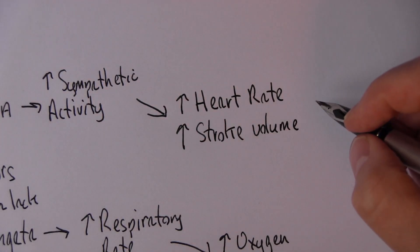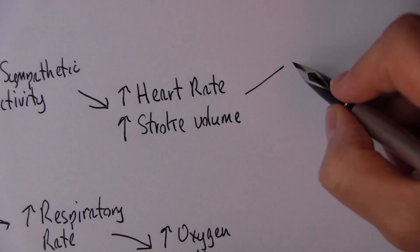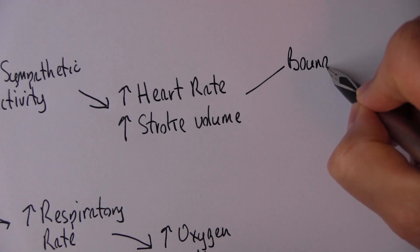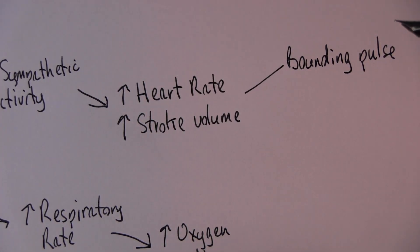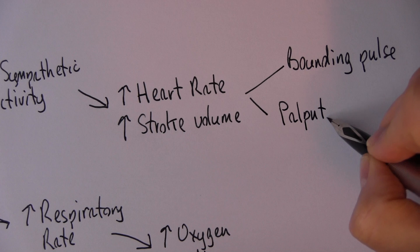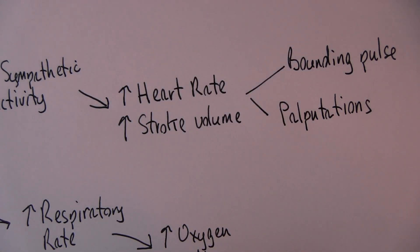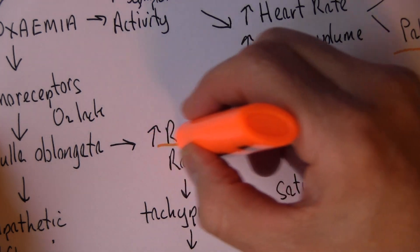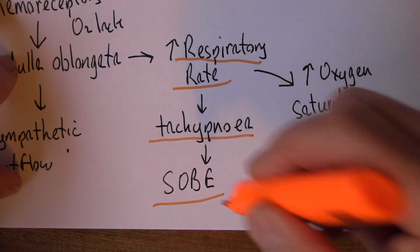This gives rise to clinical features. One of the clinical features we have in anemia is a bounding pulse — the pulse is more bounding than usual — and it can also lead to palpitations, where the patient becomes aware of their heart beating. So the clinical features here are: bounding pulse, palpitations, increased respiratory rate, tachypnea, and shortness of breath on exertion.